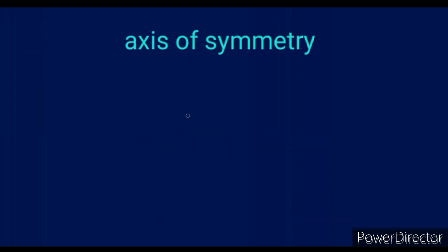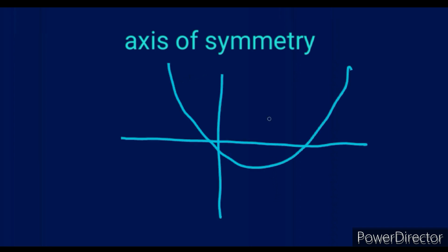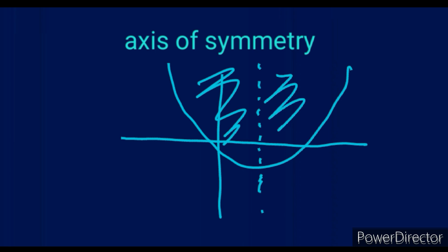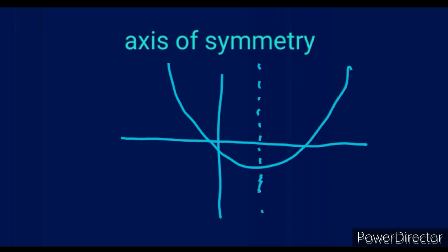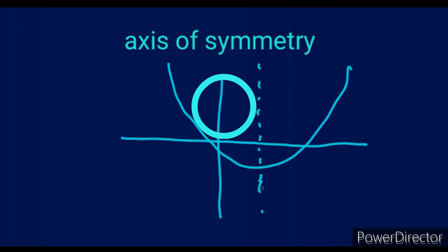First of all, you have to understand that an axis of symmetry is a line that separates the graph into two equal parts. For instance, in the parabola, the axis of symmetry is a line that separates the parabola into two equal parts. Notice this part is similar to this part — it's being reflected along this line. The axis of symmetry always makes one half symmetric to the other half.